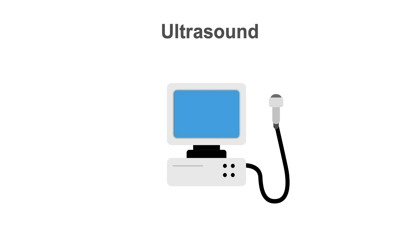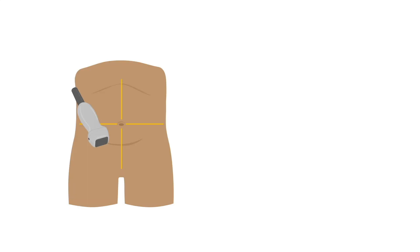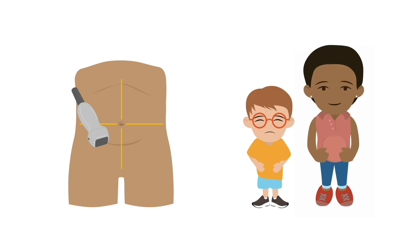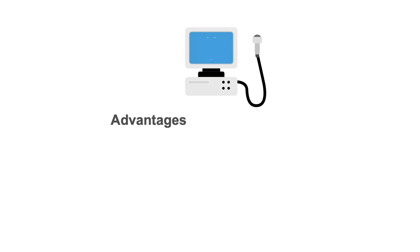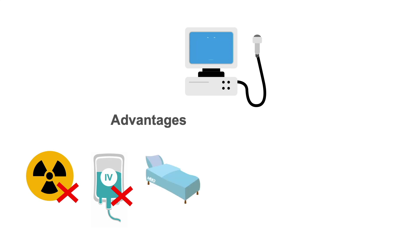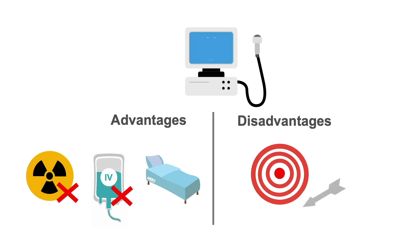Ultrasound can also be performed to look for appendicitis. While CT is generally the preferred imaging modality, abdominal ultrasound focusing on the right lower quadrant is the recommended imaging exam in children and pregnant women. The main advantages include lack of ionizing radiation and intravenous contrast, as well as bedside availability. However, the major disadvantage is much lower diagnostic accuracy than CT scan or MRI. Reports indicate 50-80% of normal appendices are not visualized on ultrasound.